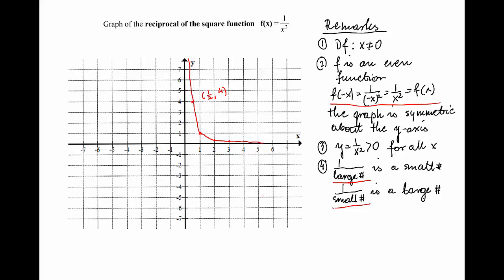So for small x, the values of y increase and the graph has a similar shape to the reciprocal function. However, since this function is even, the graph is symmetric with respect to the y-axis. By plotting a couple of points we obtain the complete graph of the function.